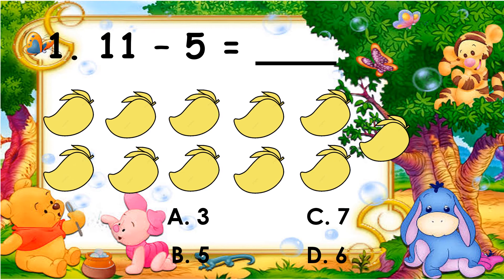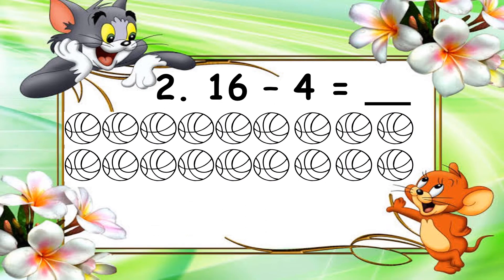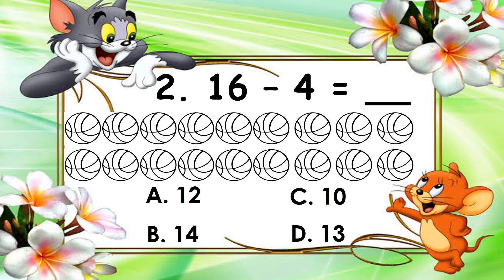What is your answer? Write it on your paper. Number two: 16 minus 4 is equal to blank. Is it A, 12; B, 14; C, 10; or D, 30?